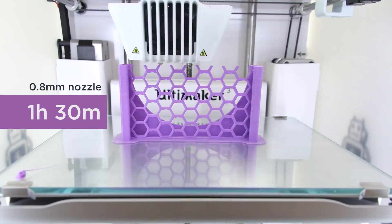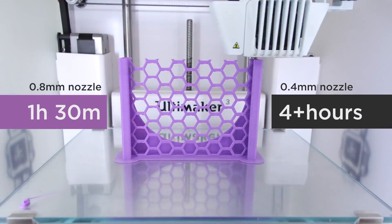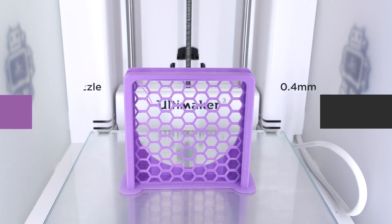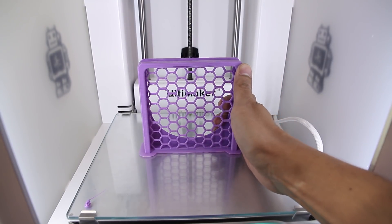This part took just an hour and a half which would have taken 4 hours with a regular 0.4mm nozzle. The first layer had great bed adhesion thanks to the wide brim around the perimeter.